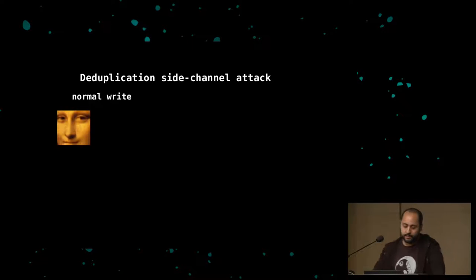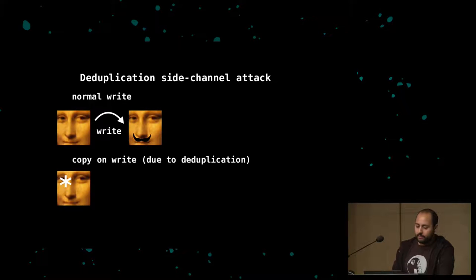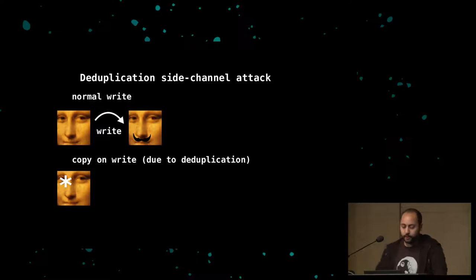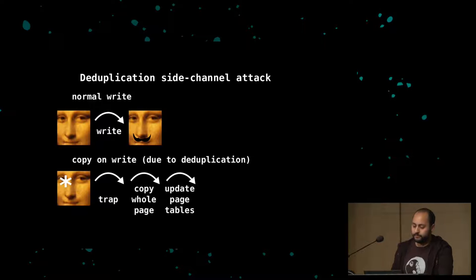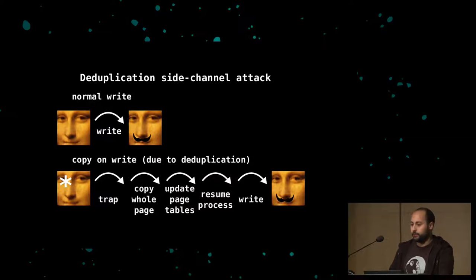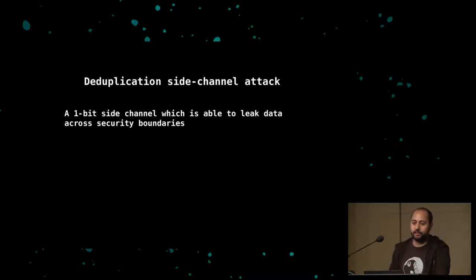Let's look at the side channel. If you have a page that belongs to you, you just write to it. But with memory deduplication and copy-on-write, if you write to it you need to go to the kernel, the page has to be duplicated again, page tables updated, then the process resumes. This introduces a one-bit side channel allowing you to see if a page exists in another process or another VM.